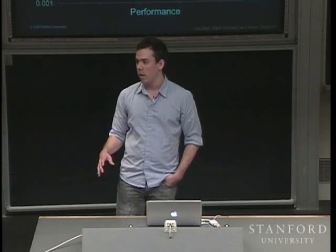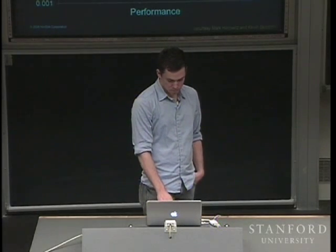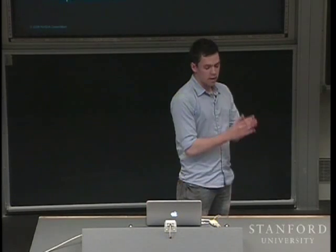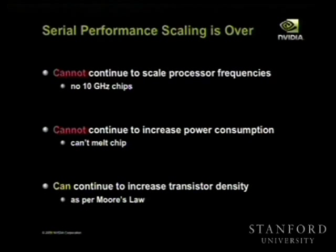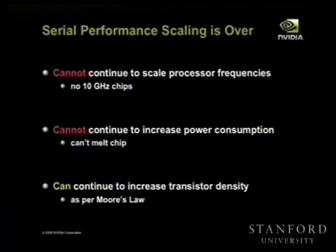Basically, serial performance scaling is over. That last graph said that if we want to make our chips faster and faster, we have to make them hotter and hotter and feed them more power. But if you go to Best Buy, you'll note that you don't see any processors advertised at 10 gigahertz clock speed — that just doesn't happen anymore. You don't put clock speed on the box anymore; you put number of cores. Because we can't actually make serial processors any faster, and we can't continue to increase power consumption because that would melt the chip.